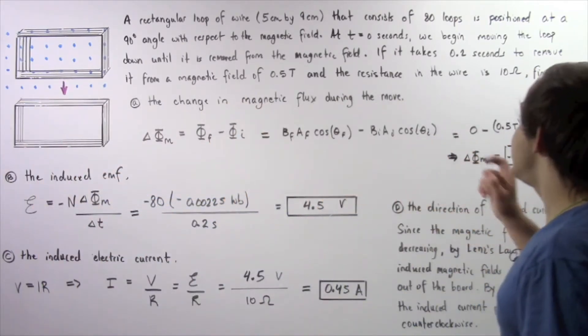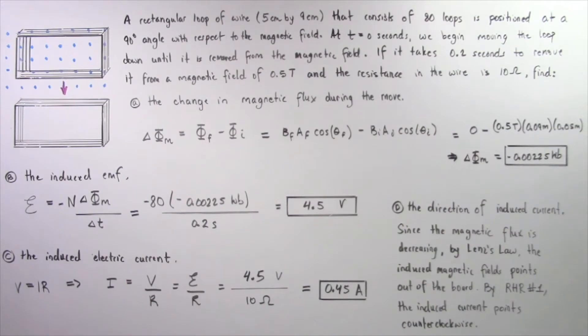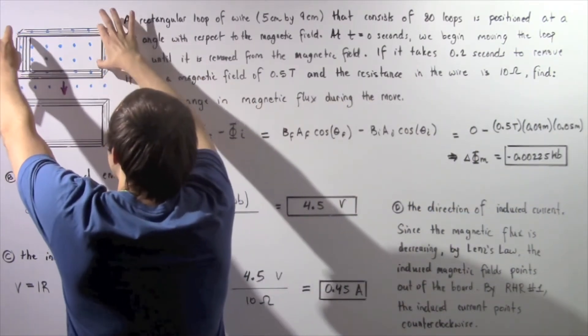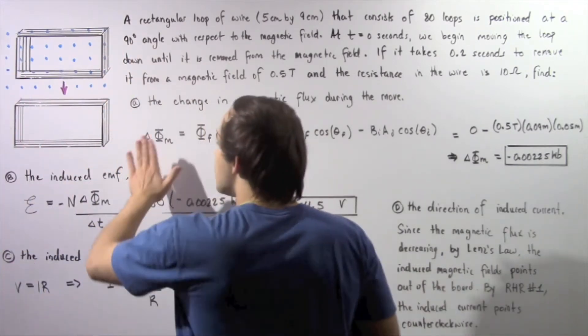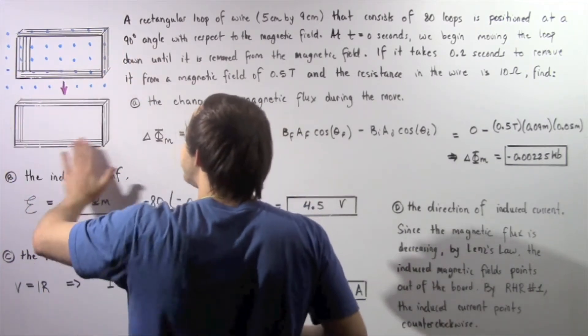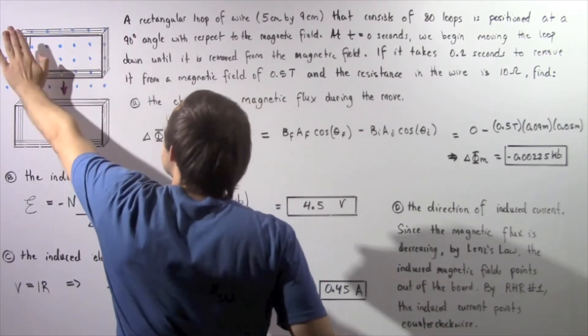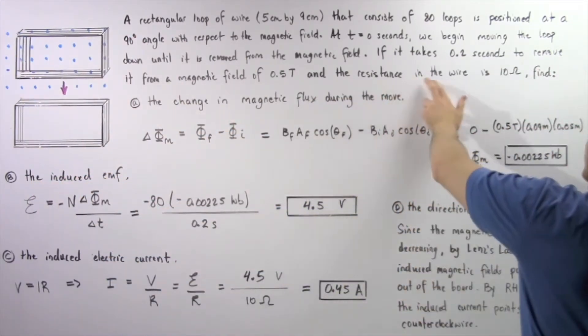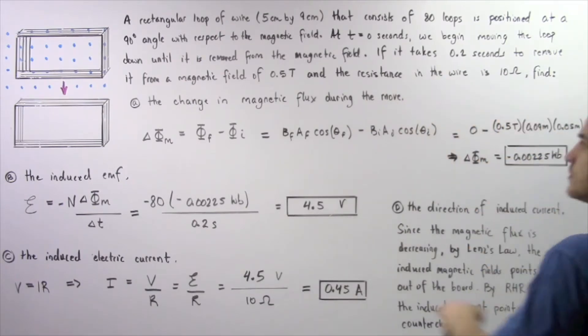If it takes 0.2 seconds to take this loop of wire and move it into the following region where there is no magnetic field and the magnetic field at this point is 0.5 teslas and the resistance in the wire is 10 ohms.